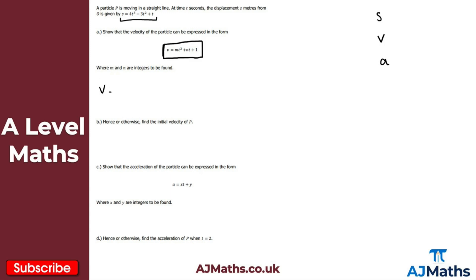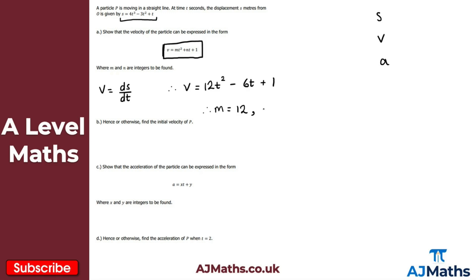So v is equal to ds by dt. Differentiating term by term: 4 times 3 gives 12, reduce the power by 1 so I get 12t squared. Then minus 3t squared gives minus 3 times 2 which is minus 6t. Plus t differentiates to give plus 1. So I need to identify the values of m and n — m is 12 and n is minus 6. And there we have it, that's our solution to part a.